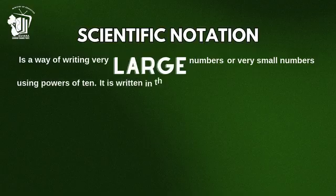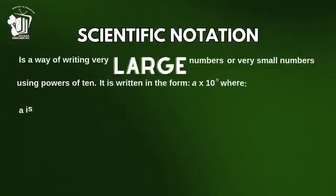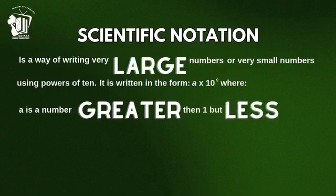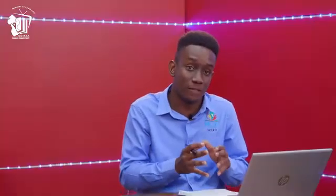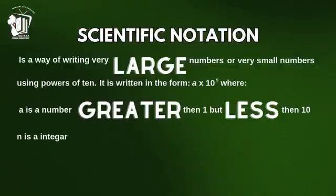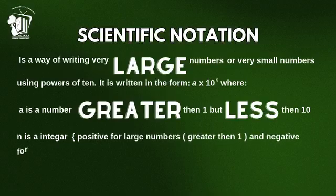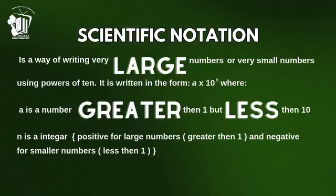Scientific notation is written in the form a multiplied by 10 raised to the n power. Here, a is a number that is greater than 1 but less than 10 — a cannot exceed 10 nor be smaller than 1. And n is an integer: it's positive for large numbers greater than 1, and negative for small numbers less than 1. We'll look at that in more detail with examples.